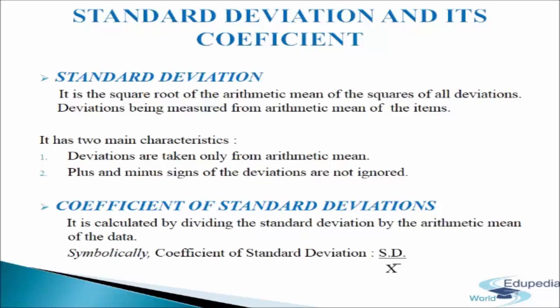The concept of standard deviation was introduced by Carl Pearson in 1893. It is the most important measure of dispersion and an absolute measure of dispersion. It satisfies most of the characteristics of an ideal measure. Standard deviation is also known as root mean square deviation.